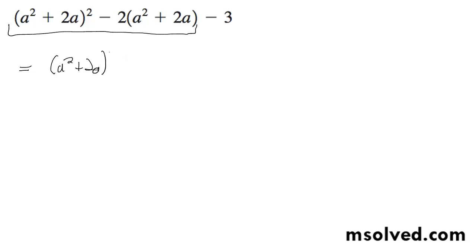And then what we get is quantity a squared plus 2a and plus 1. And then minus 3 quantity a squared plus 2a minus 3.